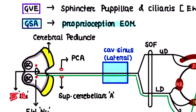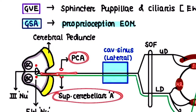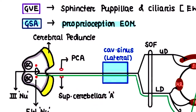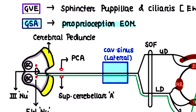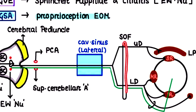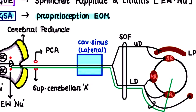These nuclei are the cell bodies in the CNS. The third cranial nerve nuclei emerge on the ventral surface at the midline, then pass between two arteries: the posterior cerebral artery and the superior cerebellar artery. After passing between these arteries, it goes into the middle cranial fossa, where we have the cavernous sinus. It travels laterally through the cavernous sinus, then reaches the superior orbital fissure, where it divides into an upper division and lower division, entering the orbital cavity.